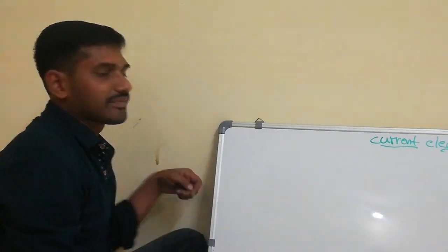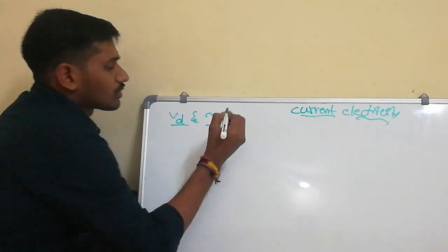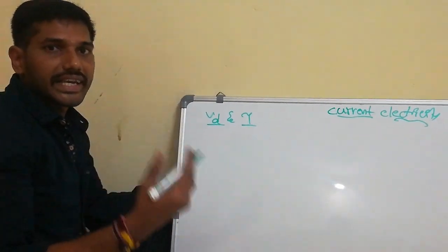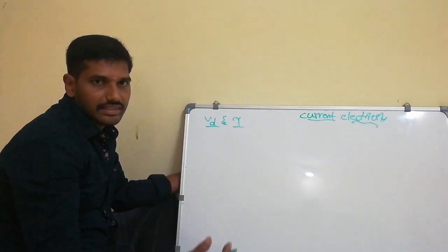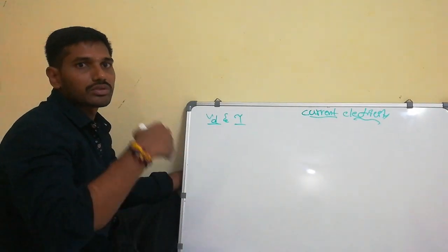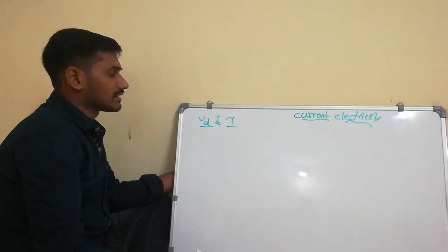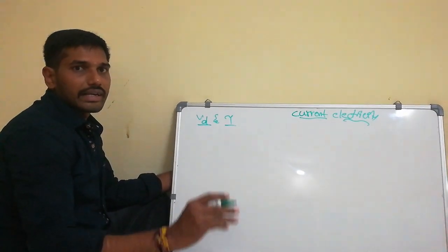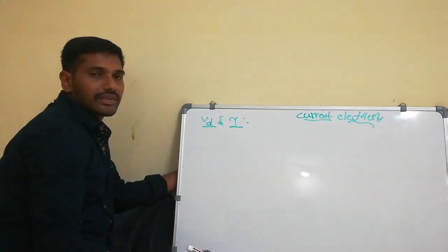So what is the relation between drift velocity and relaxation time? What do you mean by drift velocity? The drift velocity is the average velocity gained by the electrons of a conductor, which opposes the electric field. The average velocity of an electron in a conductor under an electric field, opposed by the electrons, is known as the drift velocity.